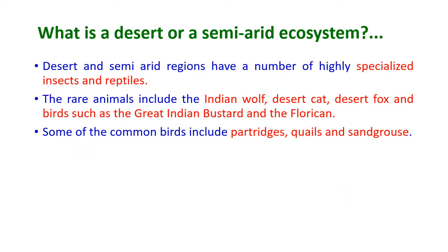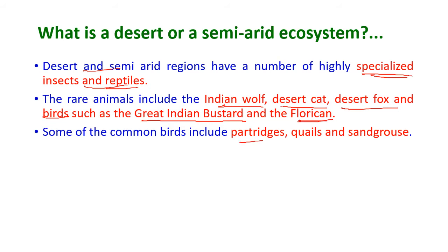The desert and semi-arid regions have a number of highly specialized insects and reptiles. Rare animals include the Indian wolf, desert cat, and desert fox, and birds such as the Great Indian Bustard. Some of the common birds include the partridges, quails, and sandgrouse.